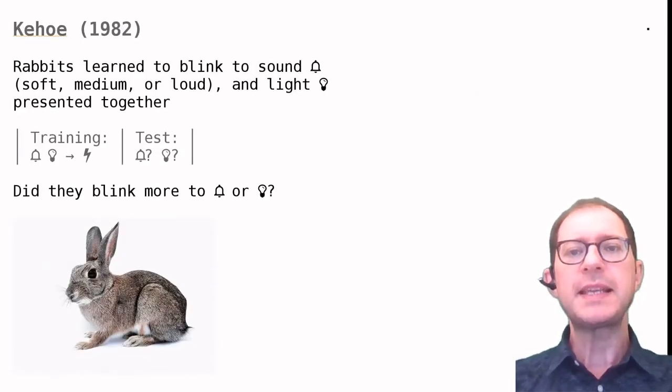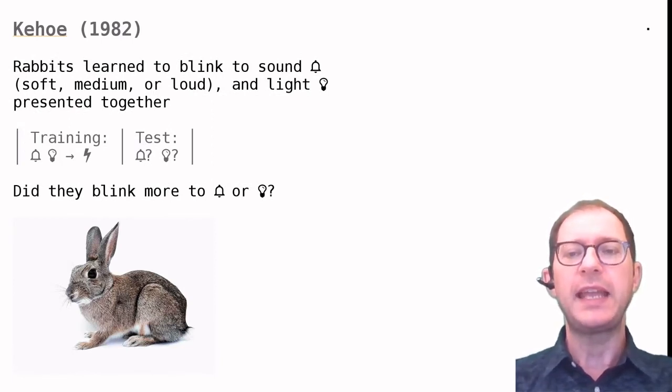In a classic experiment, Kehoe conditioned rabbits to blink to a compound of a light A and a tone B. For some rabbits the tone was soft, for others medium, and for others yet loud. You can review the lesson on Pavlovian preparations if you don't know about the eye blink conditioning procedure.